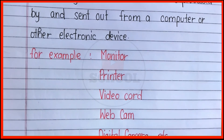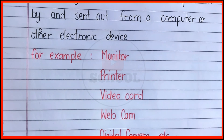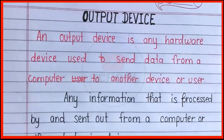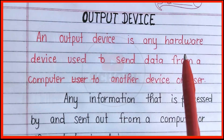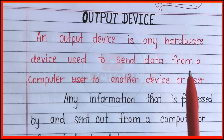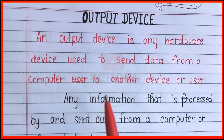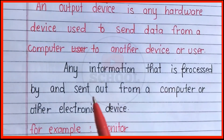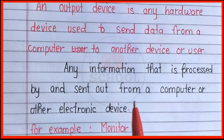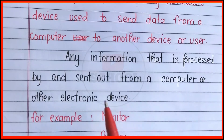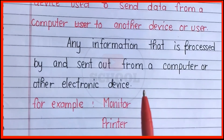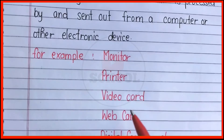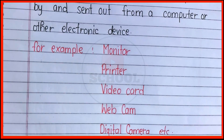These are five examples of output device. What is output device? Output device is any hardware device used to send data from a computer to another device or user. Any information that is processed by and sent out from a computer or other electronic device, for example monitor, printer, video card, webcam, digital camera, etc.